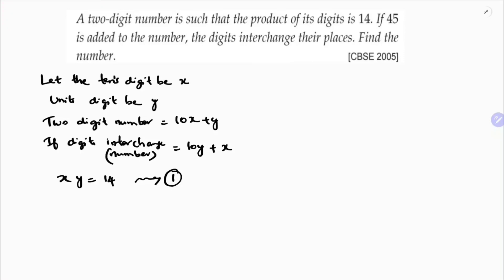The second condition is if 45 is added to the number, the digits interchange their places. Then 10x plus y plus 45 equals 10y plus x. If I simplify this, 10x plus y plus 45 minus 10y minus x equals 0. 10x minus x is 9x, plus y minus 10y is minus 9y, plus 45 equals 0.